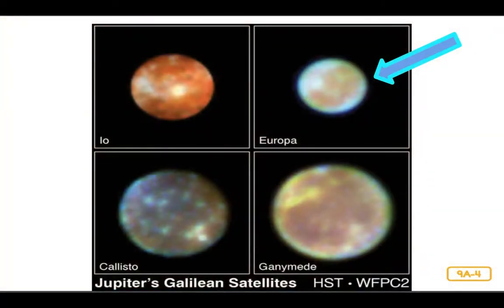There are at least 63 moons in orbit around Jupiter. Most are very small, however four of these moons are well known — they were all discovered by the famous astronomer Galileo and are easily visible with a pair of binoculars. Each is interesting in its own way, particularly Europa, the small moon in the upper right. Europa is slightly smaller than our own moon, and yet for many astronomers it is one of the most fascinating celestial bodies in the solar system.